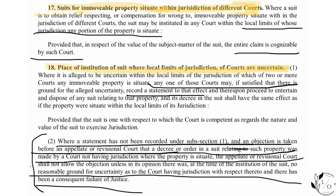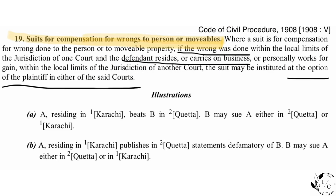Section 19 relates to compensation for wrong to person or movable property. Section 19 says if someone publishes defamatory material against you, you can file a suit where that occurred. If someone confiscates your movable property, you can file a suit there, or where the defendant resides or carries on business — but this is at the option of the plaintiff.